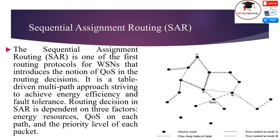The SAR algorithm creates multiple trees where the root of each tree is a one-hop neighbor of the sink. Each tree grows outward from the sink. The objective of the SAR algorithm is to minimize the average weighted QoS metric over the lifetime of the network. If topology changes due to node failures, a path recomputation is needed. As a preventive measure, a periodic recomputation of paths is triggered by the base station to account for any topology changes.